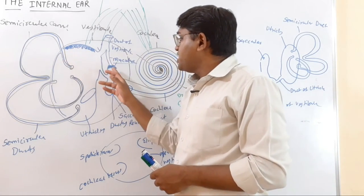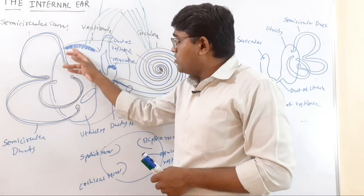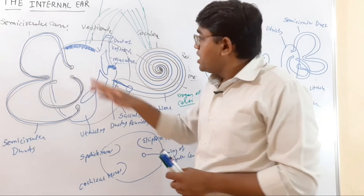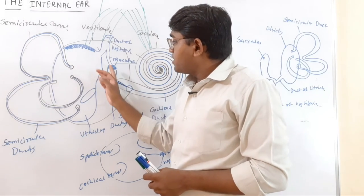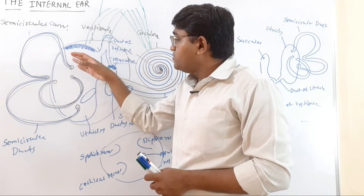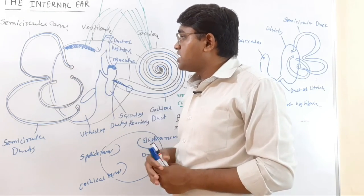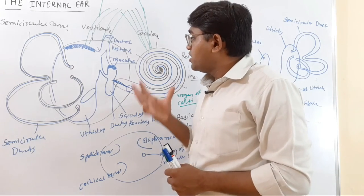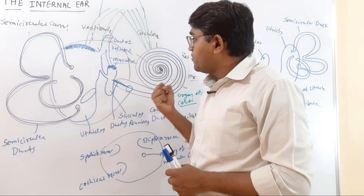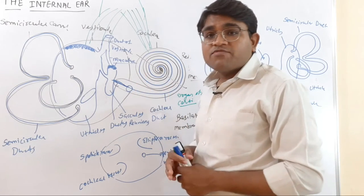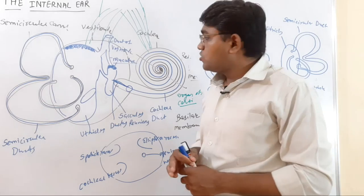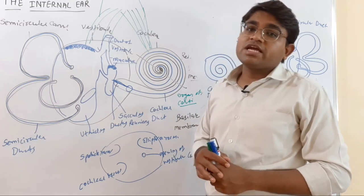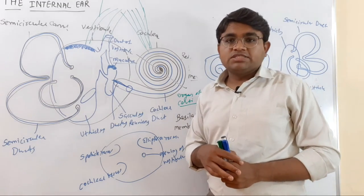On the medial surface of the saccule and utricle, the cells become modified and form special structures known as maculae. The maculae are the receptors for static balance.